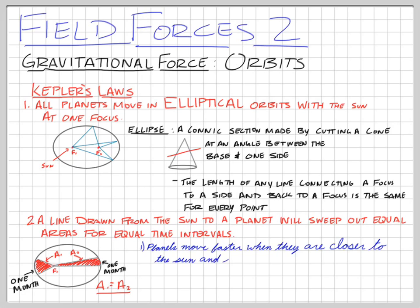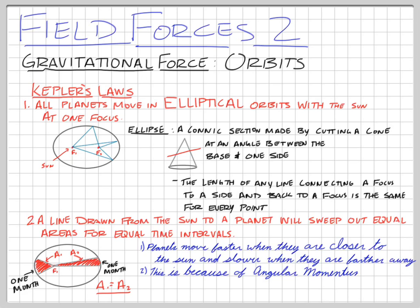The implication is that planets move faster when they are closer to the Sun and slower when they are farther away. This happens because of conservation of angular momentum. Kepler's Third Law states that the ratio of the orbital period squared to the orbital radius cubed — T²/R³ — is the same constant for every planet. We won't do calculations with that, but it's a really good law to know.